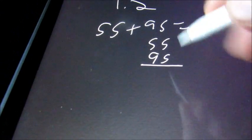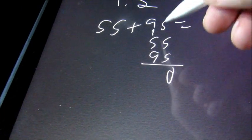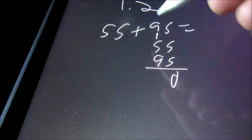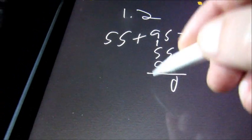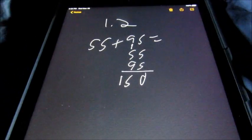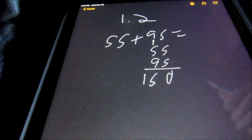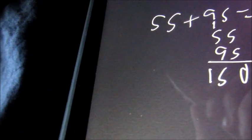5 and 5 is 10, carry the 1. 9 and 1 is 10, plus 5 is 150. You also have some problems that have a few more numbers with them.